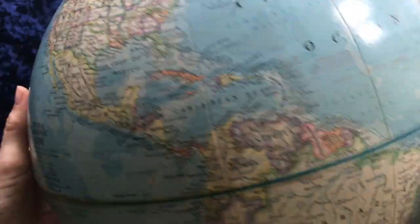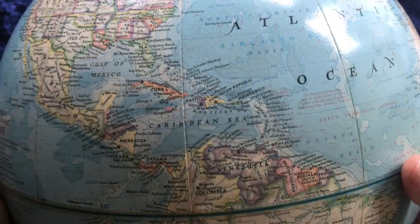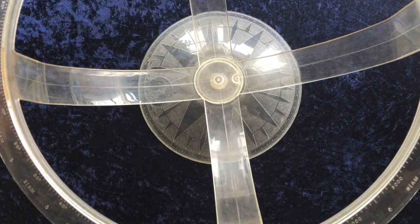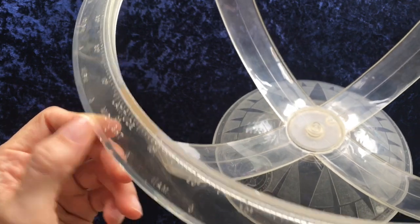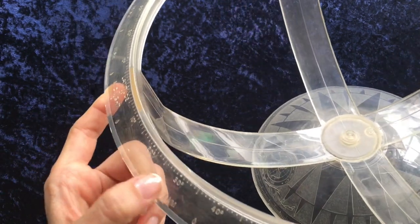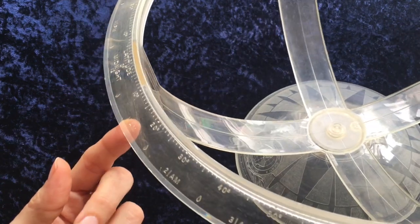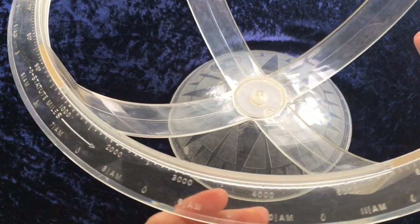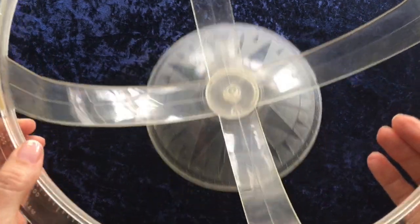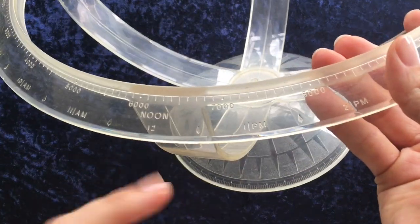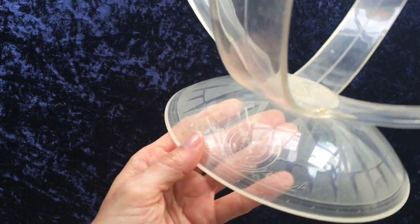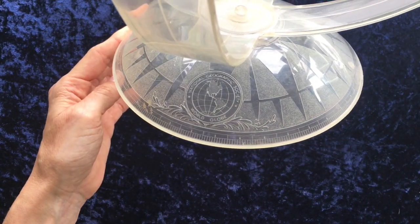It is a free standing globe, as you can see. It has a plastic stand. And here you can see not only the latitude in degrees, but the time, as well as statute miles in thousands. And there is noon. You can see there.